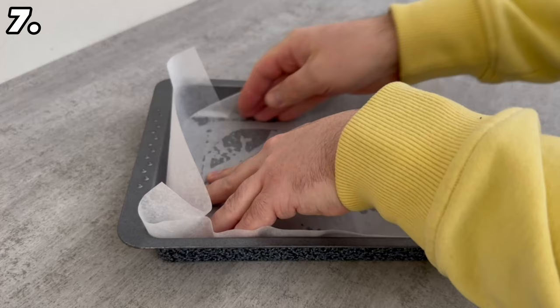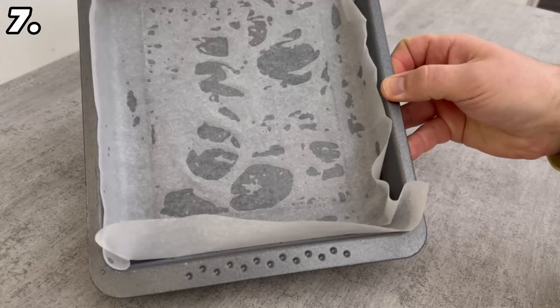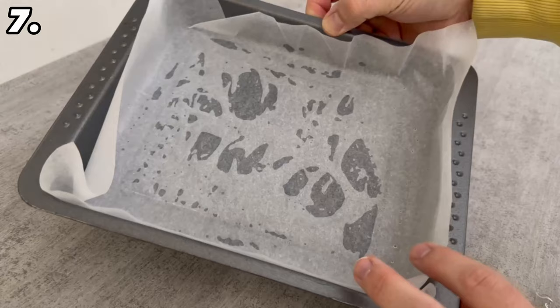When you now place the parchment paper in it, the water makes it stick nicely and you can align it perfectly in your baking dish. This way you'll never again have the problem of the parchment paper popping up on you. Look at how perfect the result is.